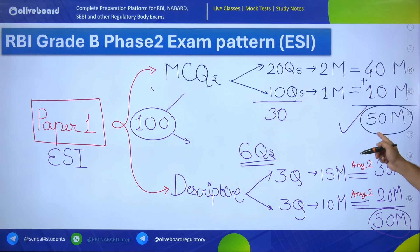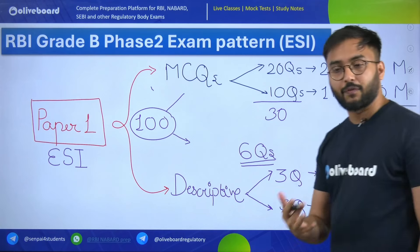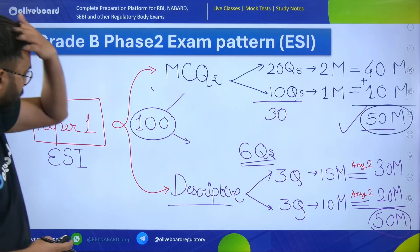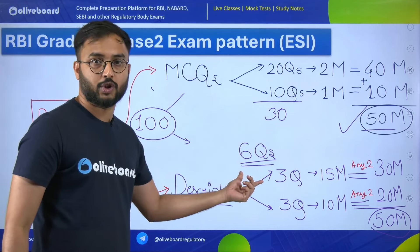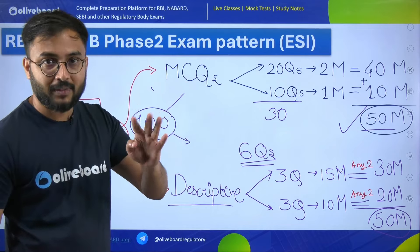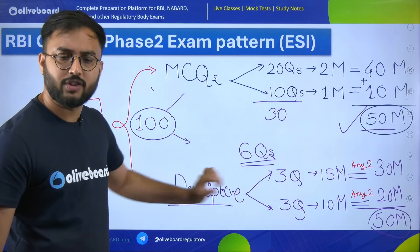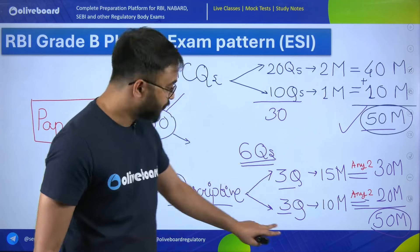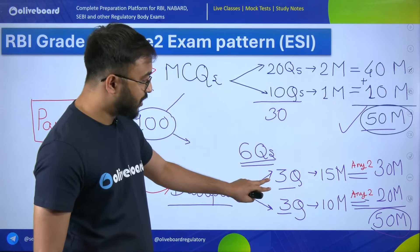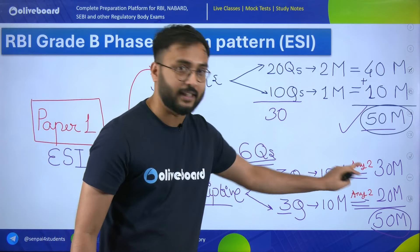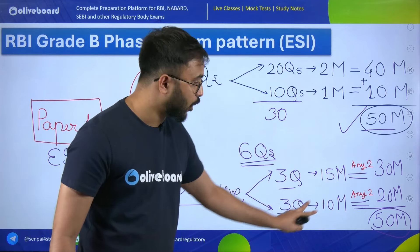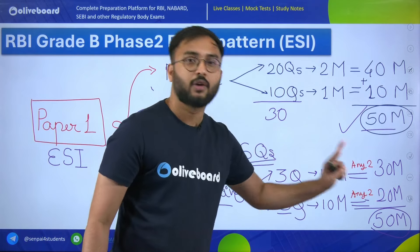Total descriptive is also 50 marks, and total objective MCQs are for 50 marks. For the descriptive section, the total number of questions is 6, out of which you have to solve any 4. These 6 questions are split by marks: 3 questions are for 15 marks, and 3 questions are for 10 marks. From the 15-mark questions you solve any 2, giving 30 marks. From the 10-mark questions you solve any 2, giving 20 marks — a total of 50 marks.